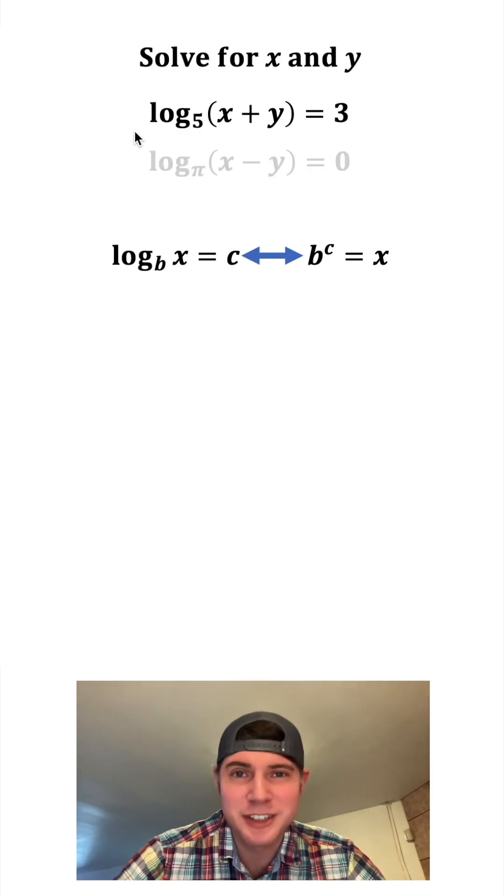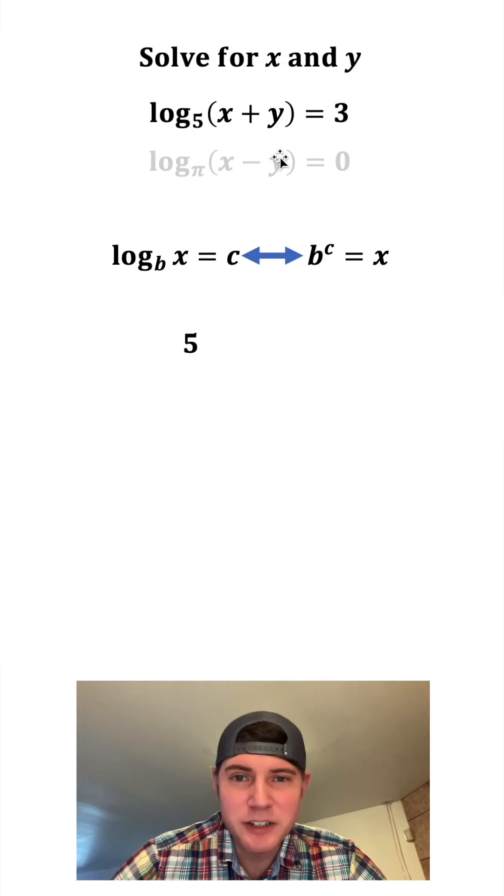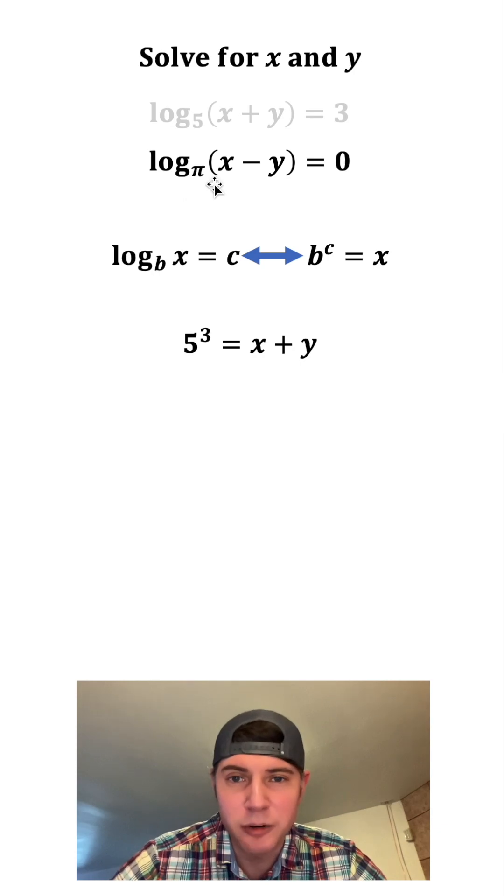Let's look at the top logarithm first. We can rewrite this as 5 to the 3 equals x plus y. Now we can rewrite the lower logarithm as pi to the 0 equals x minus y.